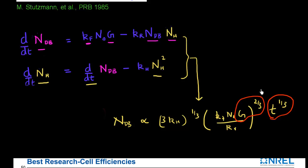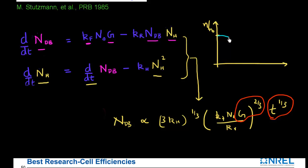Now I have some understanding of how these dangling bonds are generated. As their density increases, my efficiency falls. If I plot efficiency as a function of time, at t = 0 I have my maximum efficiency. As I keep this panel exposed to light, the efficiency degrades — initially fast because dangling bonds are rapidly created, but after a while the rate of decrease becomes quite low. The point at which efficiency has essentially stabilized is called the stabilized efficiency, and that is what you should look for when buying these panels.